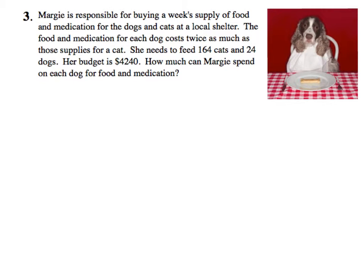Margie is responsible for buying a week's supply of food and medication for the dogs and cats at a local shelter. The food and medication for each dog costs twice as much as those supplies for a cat. So we know that the cost for a dog is twice that of a cat, so dog would equal 2 times cat.